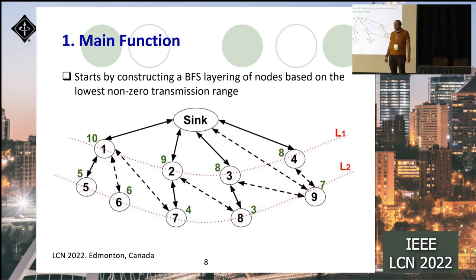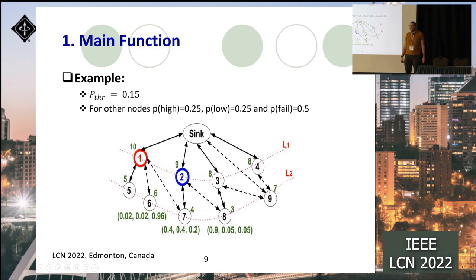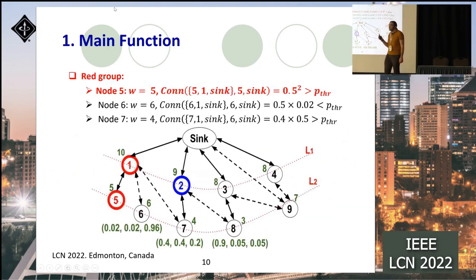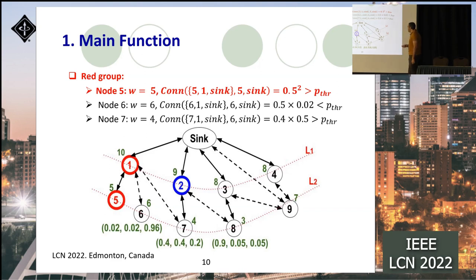The main function starts by initializing K slices by appending the sink to each one. It then arranges network nodes into BFS layering based on the lowest non-zero transmission range. For example, node nine, although it has a high transmission range allowing direct access to the sink, is placed in layer two. The function then iteratively selects a node for each slice that meets the reliability criteria. After filtering nodes that cannot meet the reliability criteria at the current iteration, it gives preference to nodes in higher BFS layers, and among those at the same layer, selects the node with the highest weight.